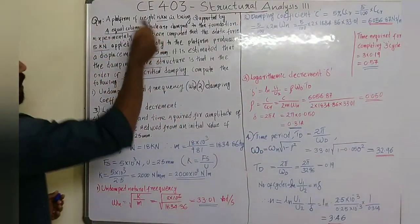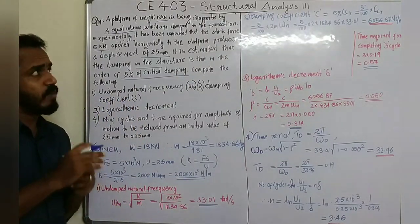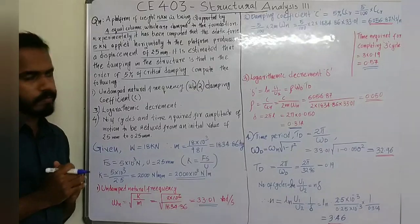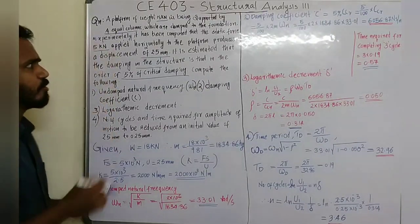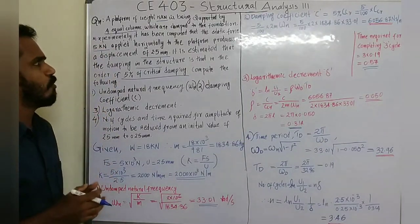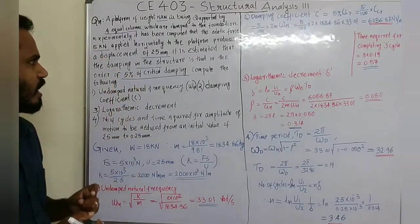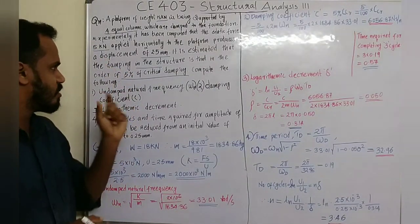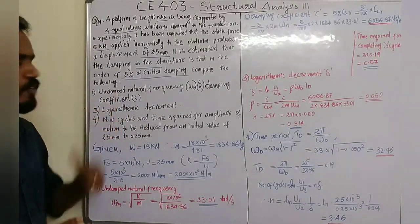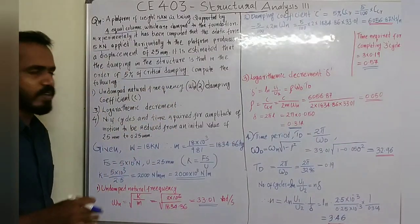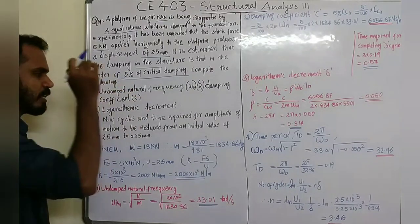A platform of weight 18 kilonewton is supported by four equal columns clamped to the foundation. Experimentally, a static force of 5 kilonewton applied horizontally produces a displacement of 2.5mm. It is estimated that damping in the structure is of the order of 5 percent of critical damping.